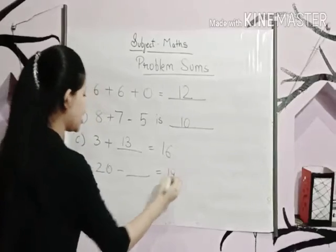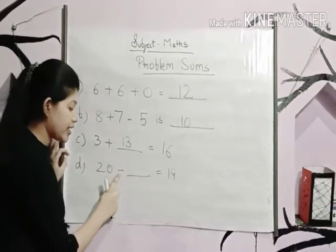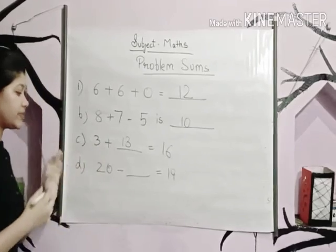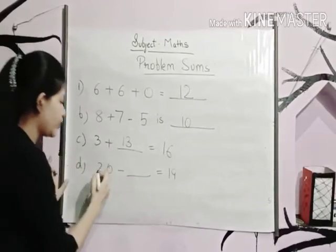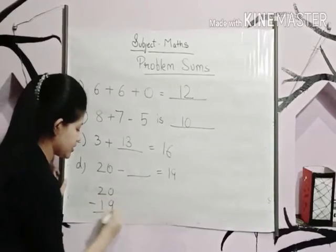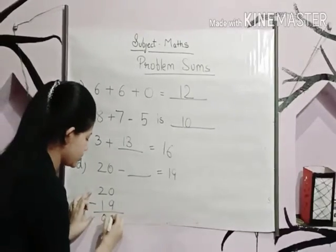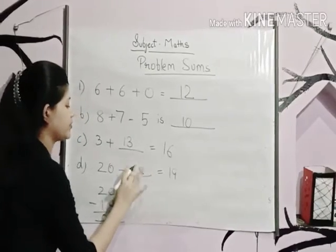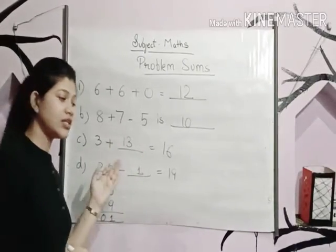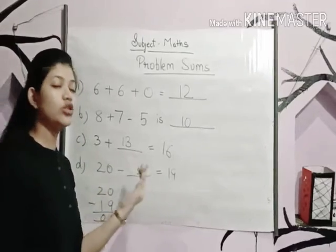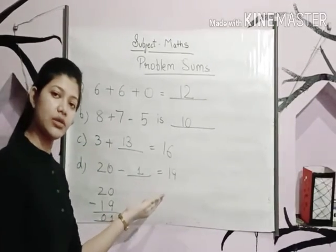Question D: twenty minus dash is equal to nineteen. Here there is a subtraction sign, so we subtract twenty minus nineteen to find the missing number. Twenty minus nineteen equals one. So twenty minus one is equal to nineteen. Remember: whether there is addition or subtraction, you subtract the given number from the answer to find the missing part.